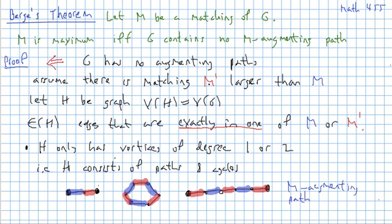And that's a contradiction because we assumed that G had no M-augmenting paths. And this finishes the proof because that means that M was actually a maximum matching.